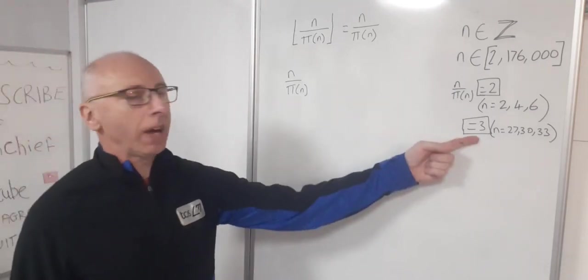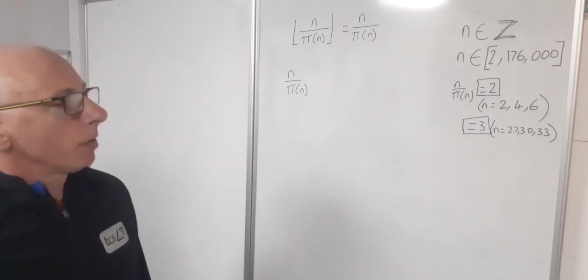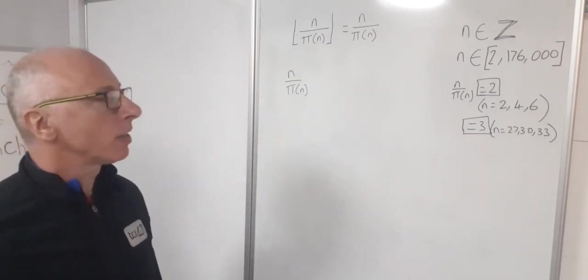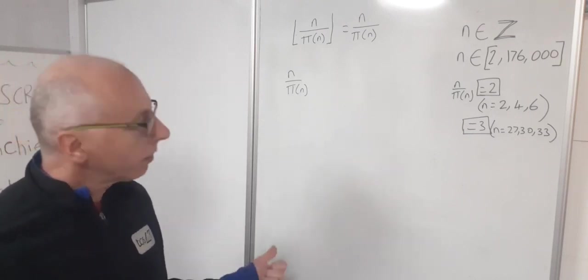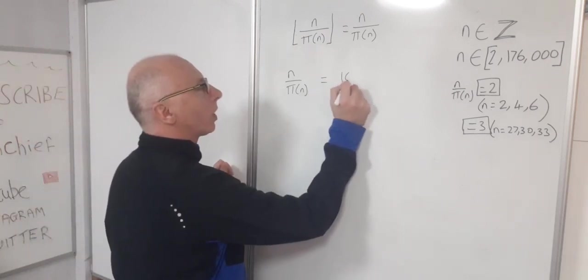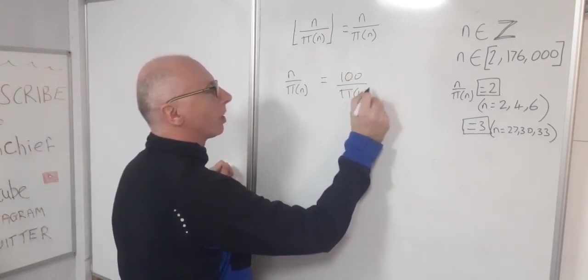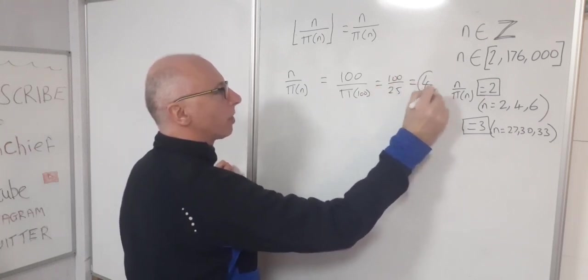Okay, so we found all the 3's. Is there any 4's in there? So one thing I do know is that up to 100 there are 25 prime numbers and I know that 100 divided by 25 is obviously going to give us 4. So we can go for 100 divided by pi over 100. That gives us 100 over 25. So that gives us a 4.